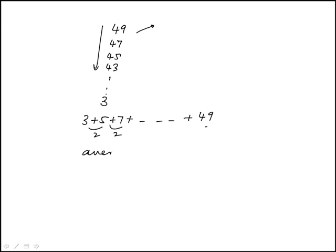So the first thing I'm going to do is find the average, and the average would be the sum of the first and last term divided by 2. So that's 52 over 2, which is 26.